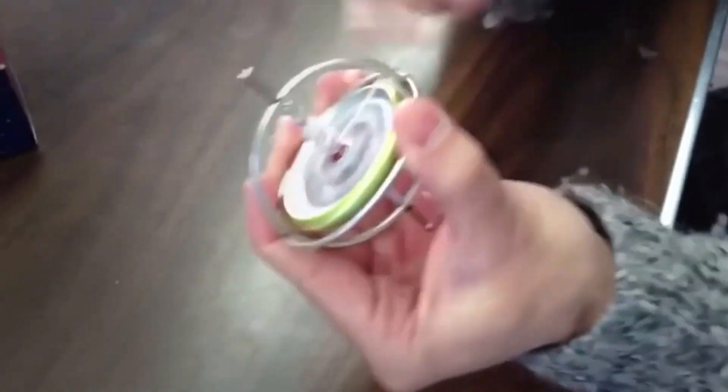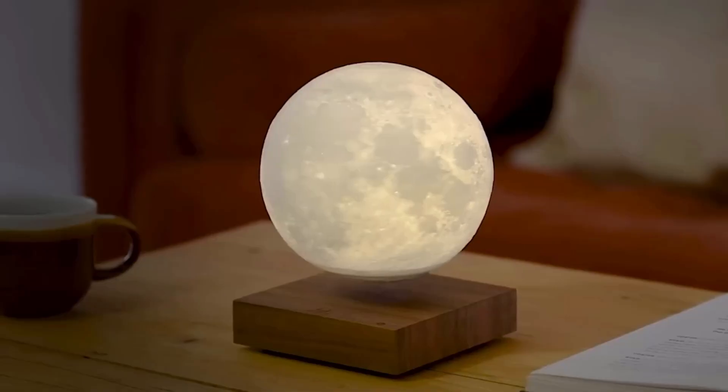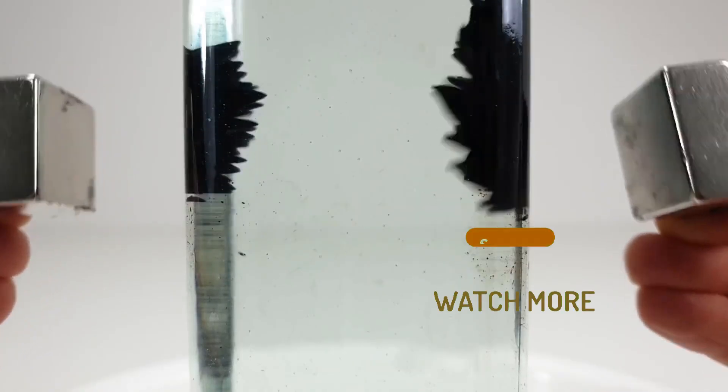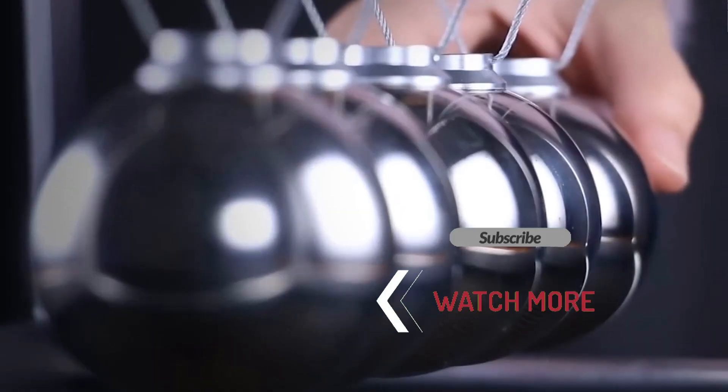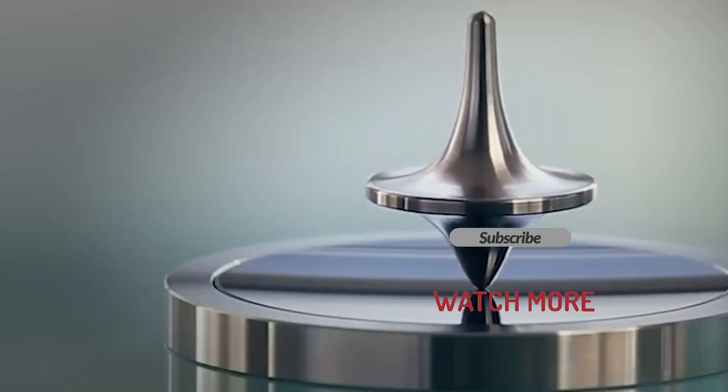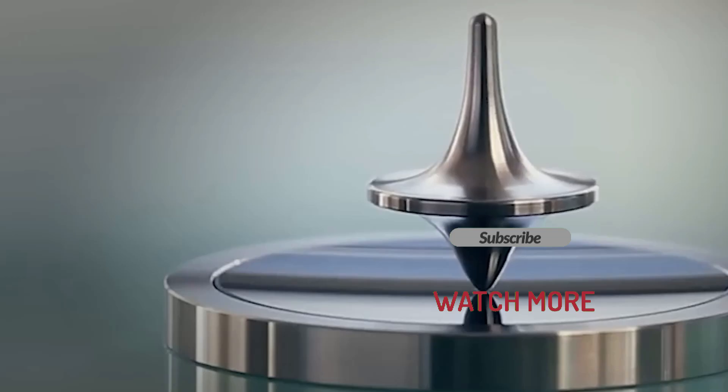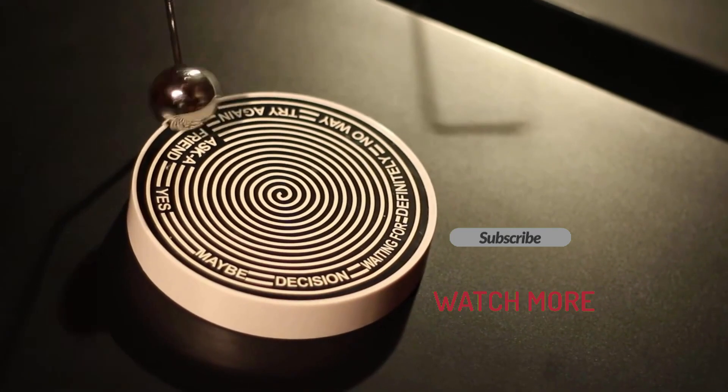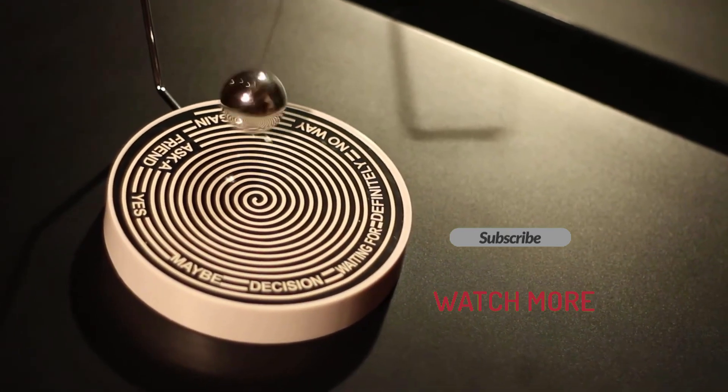And there you have it, 10 gadgets that turn the laws of physics into mesmerizing art. From floating moons to dancing liquids, these objects prove that science is anything but boring. Which one was your favorite? Let us know in the comments below. And if you enjoyed this journey into the world of kinetic wonders, don't forget to like, subscribe, and hit that notification bell for more mind-bending content. And thanks for watching.